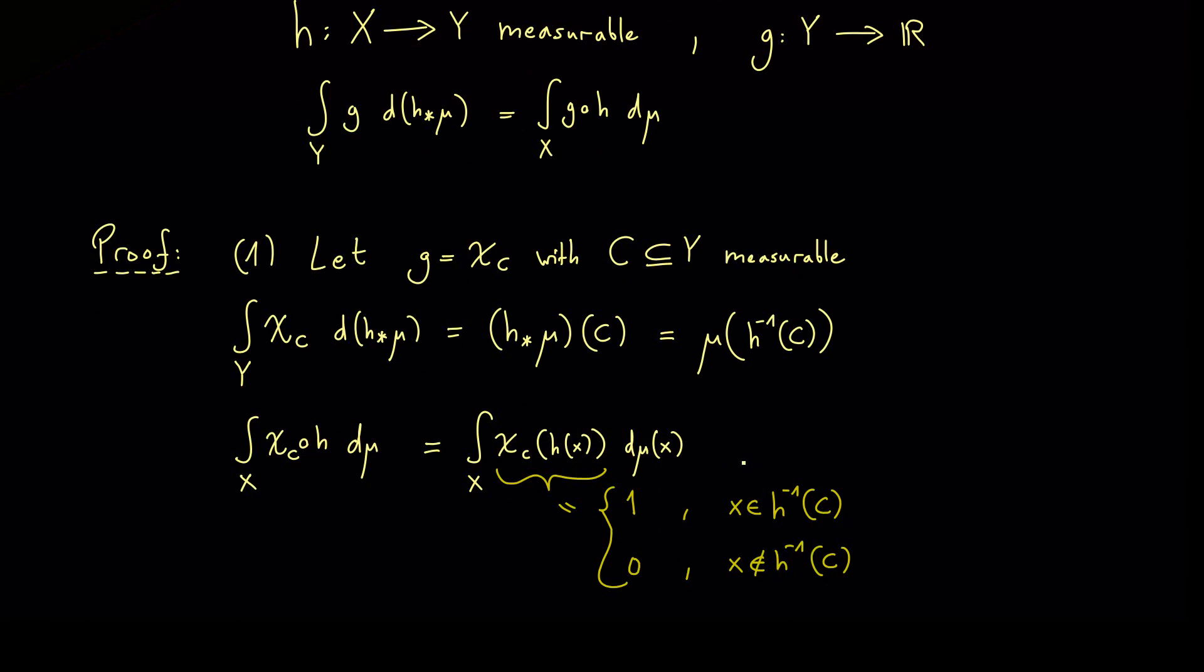This is very helpful because we see this is again a characteristic function using the pre-image. Or in other words here we have the integral of the characteristic function chi where we here have the pre-image of C, dmu. However now we see this is exactly again the measure of the set.